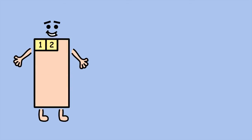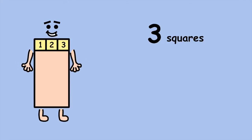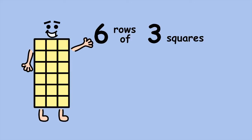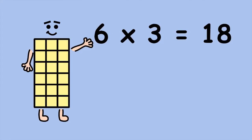If you know your times tables, there's an even quicker way of working out my area. We know each row has three squares. Now, how many rows are there? 6. 6 groups of 3, or 6 times 3, equals 18.